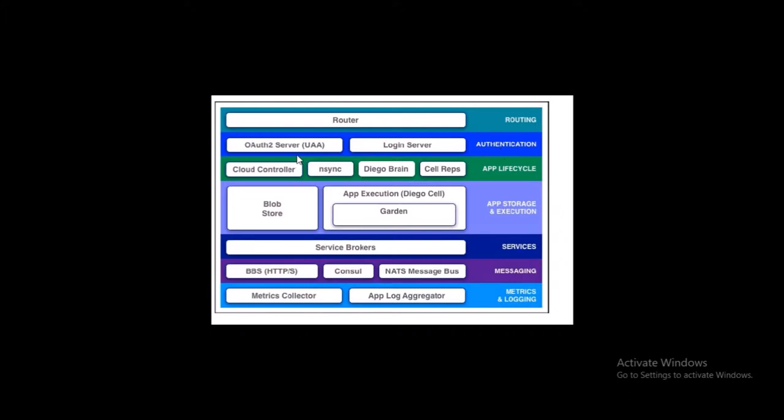The second component is Authentication. When traffic or a user enters Cloud Foundry, it needs to be authenticated. Cloud Foundry uses UAA (User Account and Authentication) as a centralized identity management service for managing authentication and authorization. It includes developers, clients, spaces, organizations, and more.